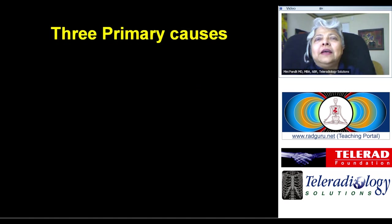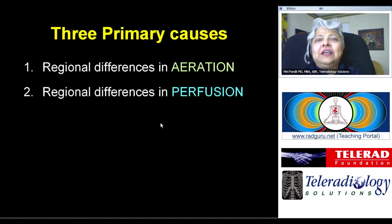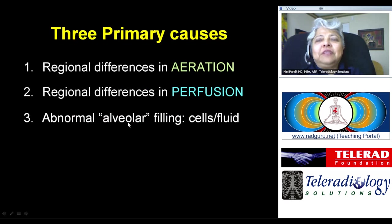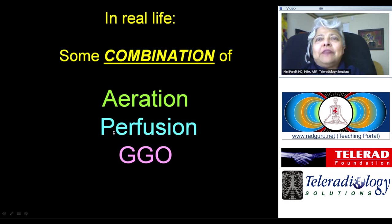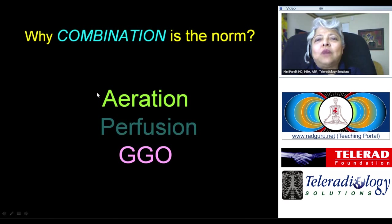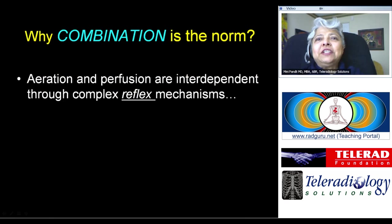The three primary causes I'll be discussing are regional differences in aeration, regional differences in perfusion, and abnormal alveolar filling process — which may contain cells, fluid, or both, in which case we call it ground glass opacities. In real life there is some combination of all three, because aeration and perfusion are interdependent through complex reflex mechanisms.